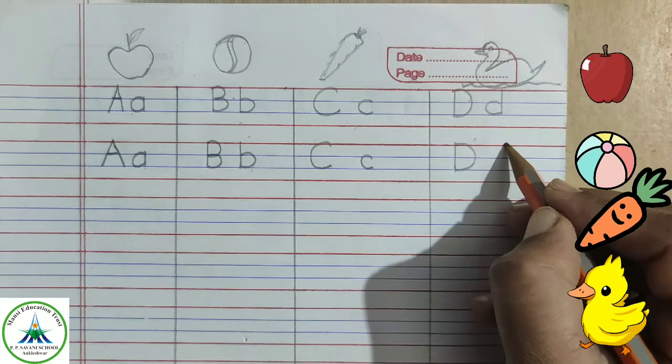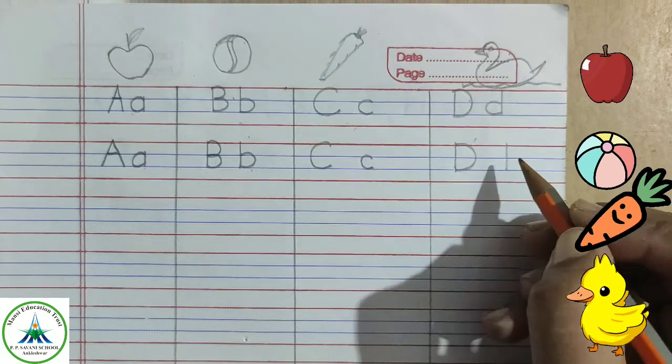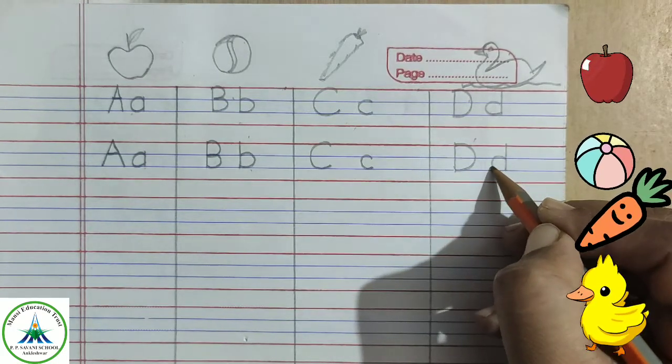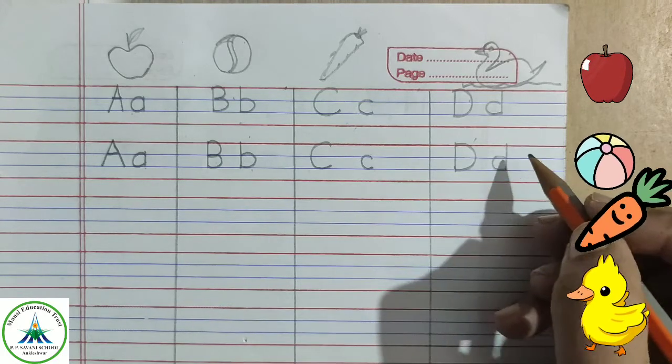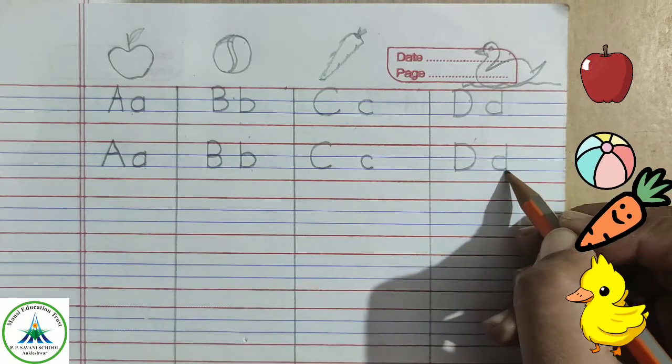To write small letter D, make a standing line in three lines and a curve in between two blue lines, touching with that standing line.